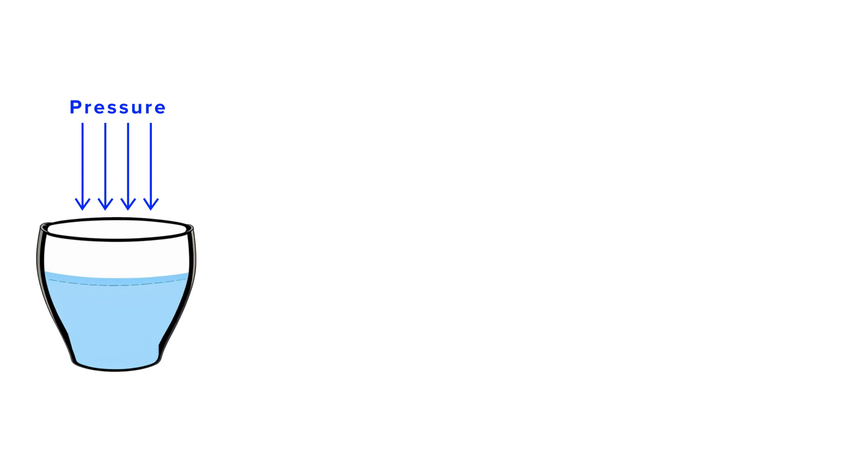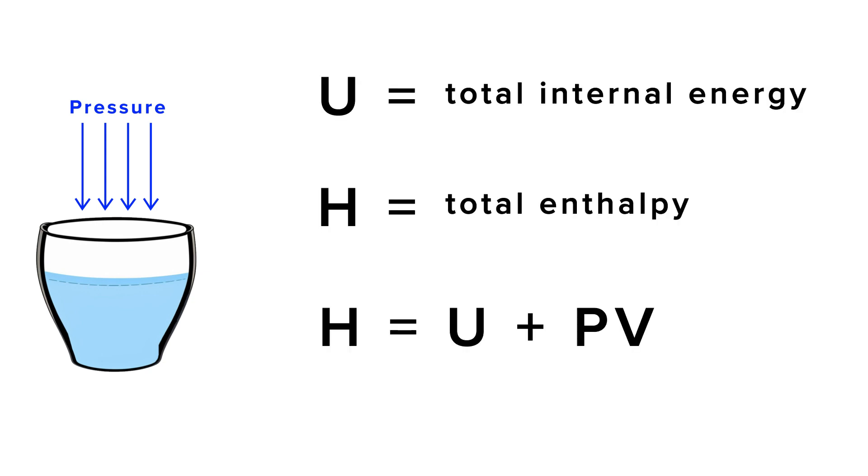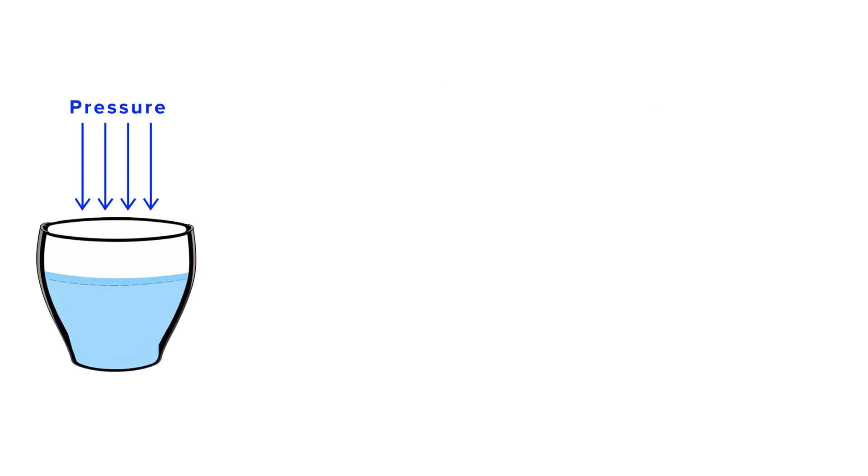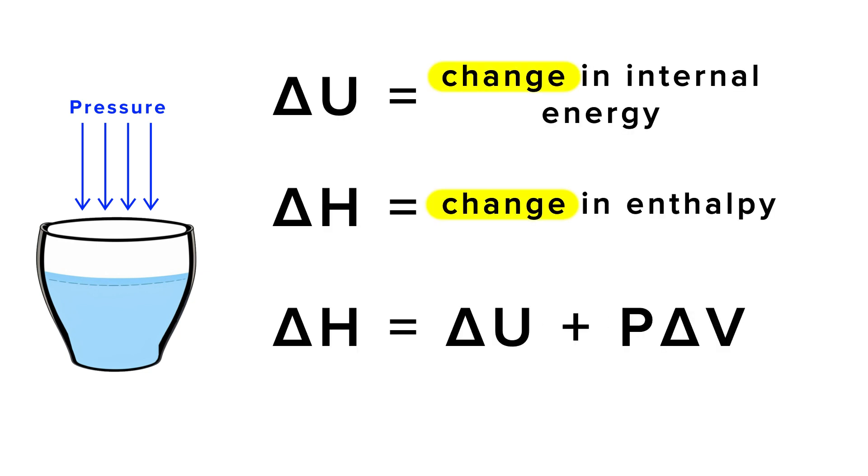And by the way, we don't really care about total enthalpy or total internal energy of a system. We are more interested in change, how these properties change, because it's easier to measure and it gives us more information. So we put here this little triangle or delta that means change.